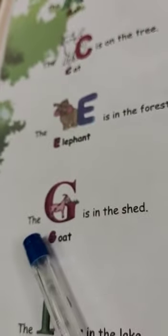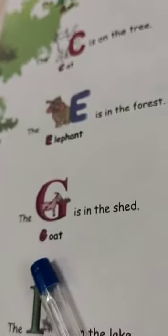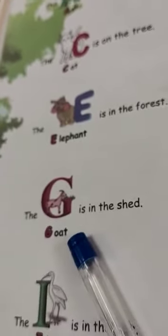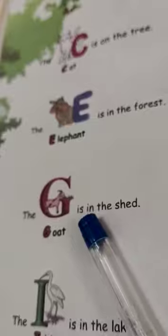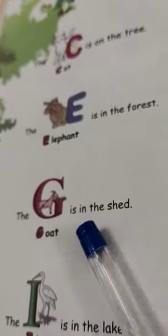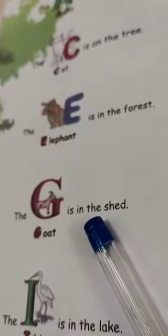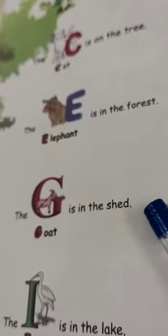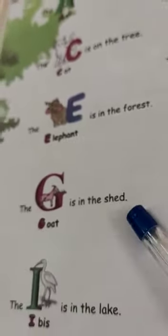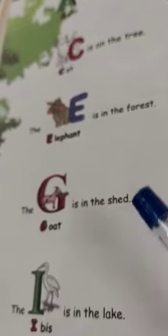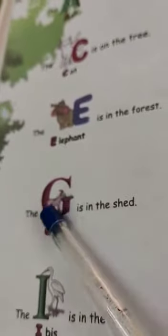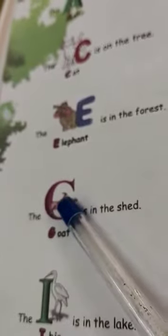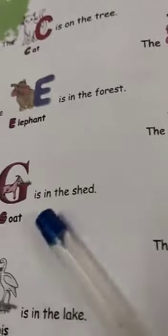Now: G-O-A-T, goat, I-S I-N the S-H-E-D, shed. So the goat is in the shed. It is imagined as a shed — inside alphabet G is imagined as a shed.